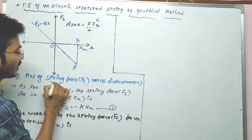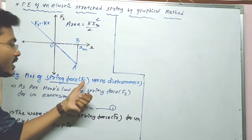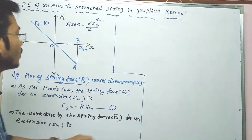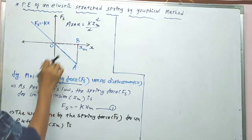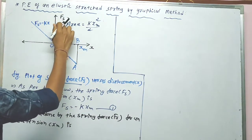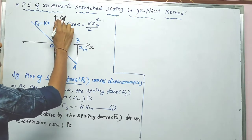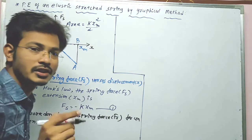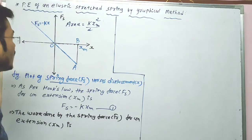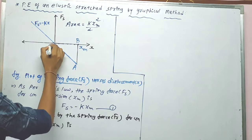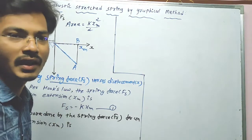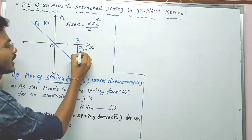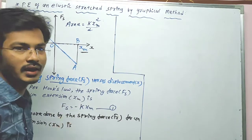The plot shown here is the spring force Fs versus displacement x. On the y-axis we have considered the spring force Fs, and on the x-axis we have considered x, that means displacement. This is our origin O. Now we are assuming that the maximum displacement occurring is xm.